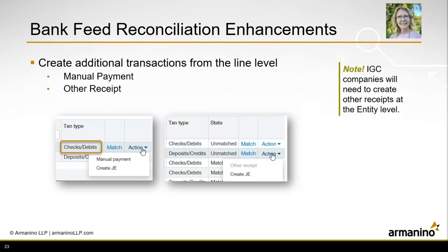On the bank reconciliation feed itself, they've added enhancements related to adding transactions from the line level. For a check debit, under the action you can do a manual payment or create a journal entry. For deposits, the action allows an other receipt or create a journal entry. Note that other receipt may be grayed out in a multi-currency, multi-base-currency environment at the top level — you would need to enter that receipt at the entity level. But it's great to have the ability to do manual payments as well as other receipts.